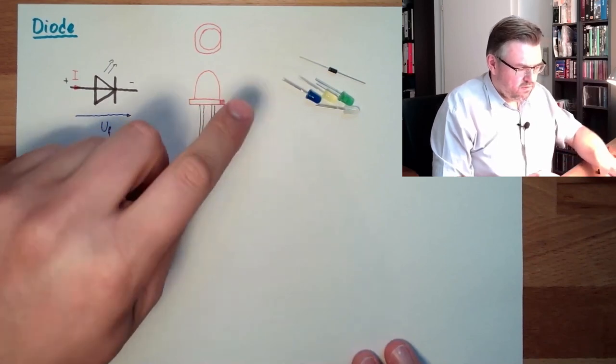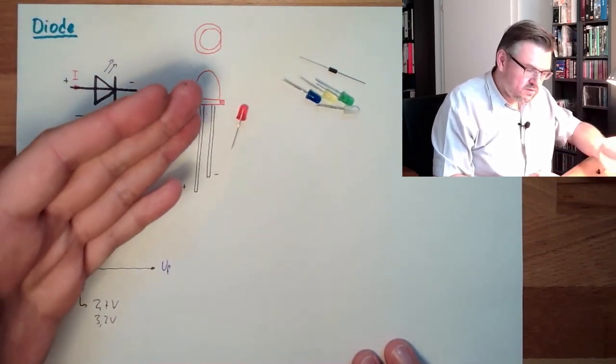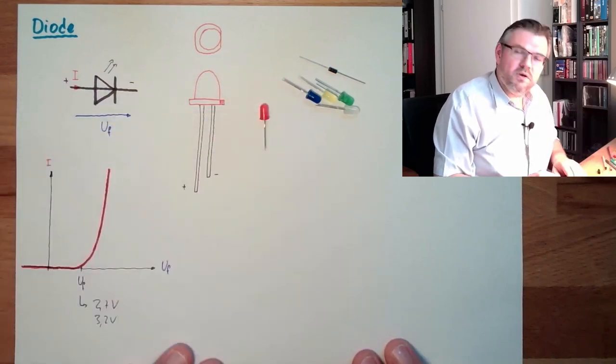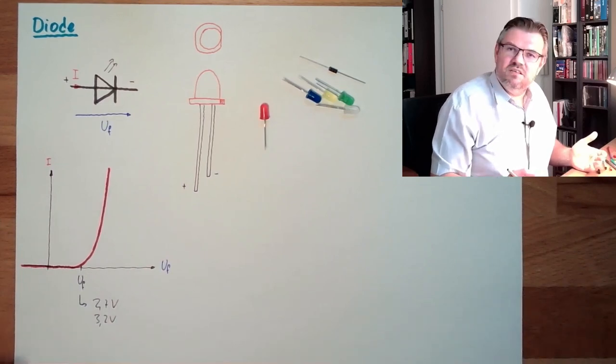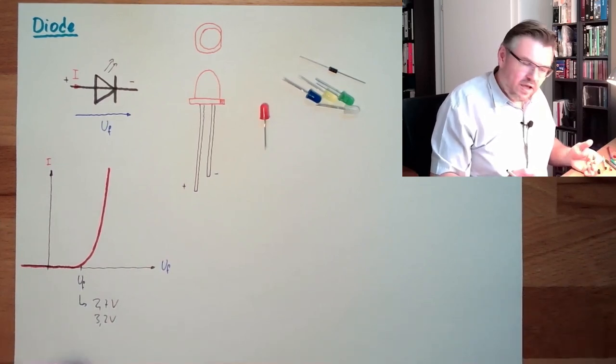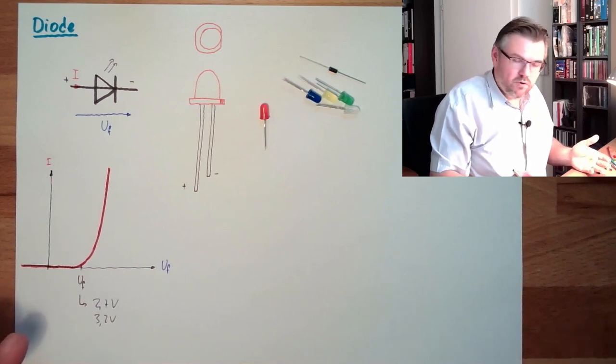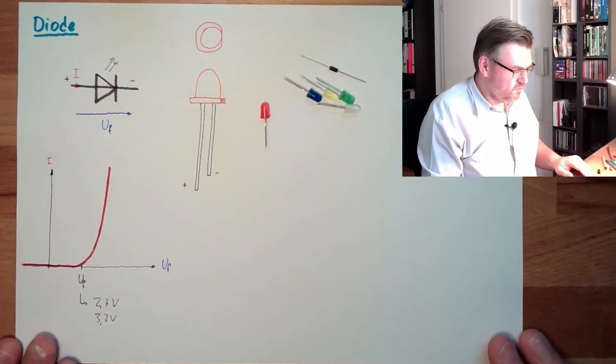And these currents will simply destroy the LED. You don't have to try it. It is not even funny. It will not smoke, nothing. It will just not lit. Because the current is running through this, through this semiconductor material, it is melting down. That's it. Will not lit, it will not light anymore. Nothing. Just destroyed. Not even funny. A lot of more funny things out there to destroy.